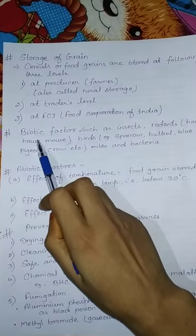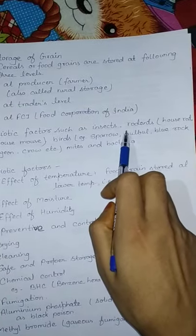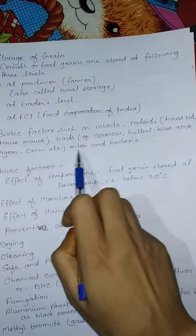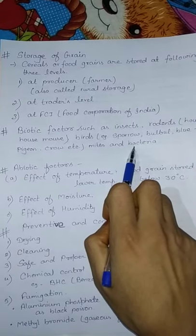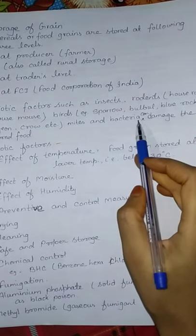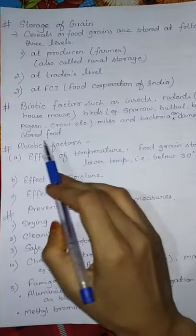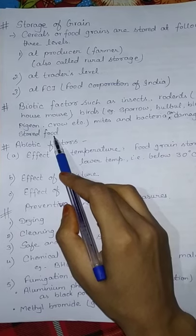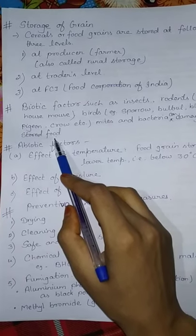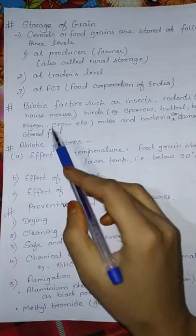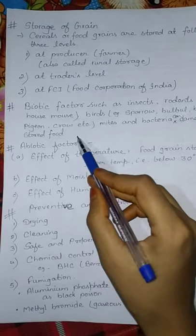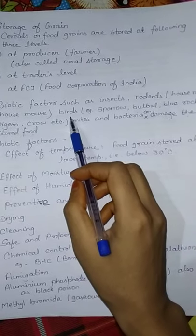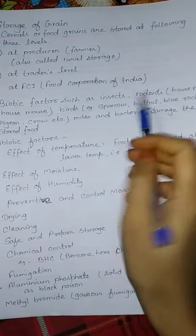Biotic factors such as insects, rodents, birds, mites, and bacteria can damage the stored food grain. When we store crops, they can be destroyed even in the storage room due to these biotic factors including insects, rodents meaning mice, birds, mites, bacteria, etc.